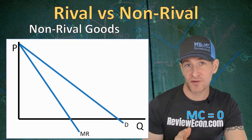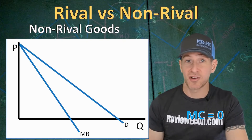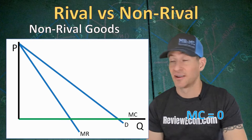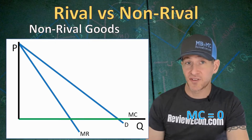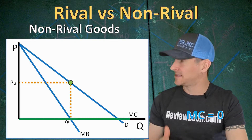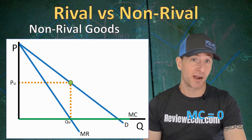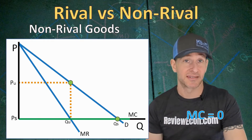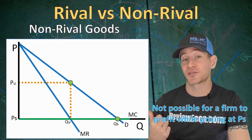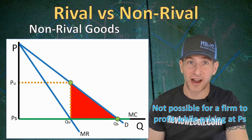The marginal cost of production for non-rival goods is going to be zero. If we draw a demand curve with marginal revenue below — this would be for a monopoly or monopolistically competitive firm producing a non-rival good — the cost of production will be along the x-axis where marginal cost is zero. This firm will produce where MR equals MC and price at the demand curve above. That is the unregulated price and quantity, but the socially optimal price and quantity is at PS and QS, giving us a triangle of deadweight loss.